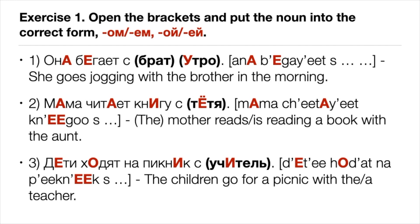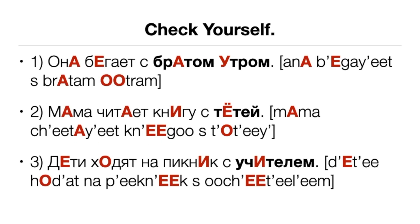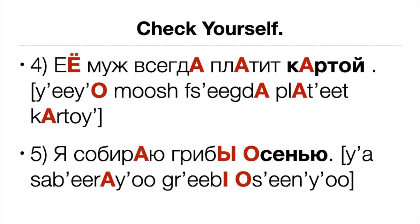Exercise one. Pause the video, open the brackets and put the noun into the correct form. Endings to use: -ем, -о, -ой, -ей. Check yourself. Number one: Она бегает с братом утром. Number two: Мама читает книгу с тётей. Number three: Дети ходят на пикник с учителем. Number four: Её муж всегда платит картой. Number five: Я собираю грибы осенью.